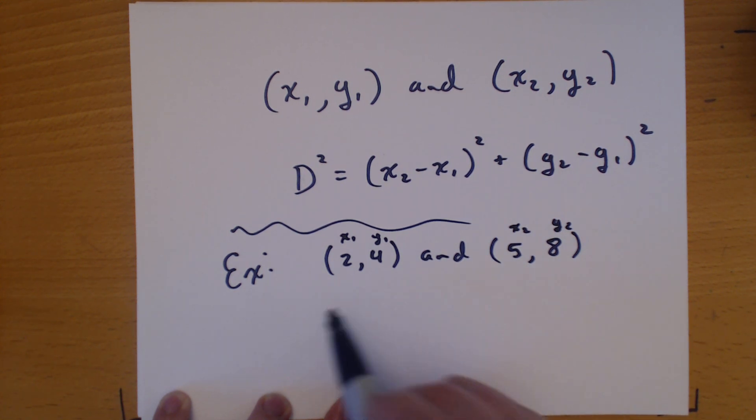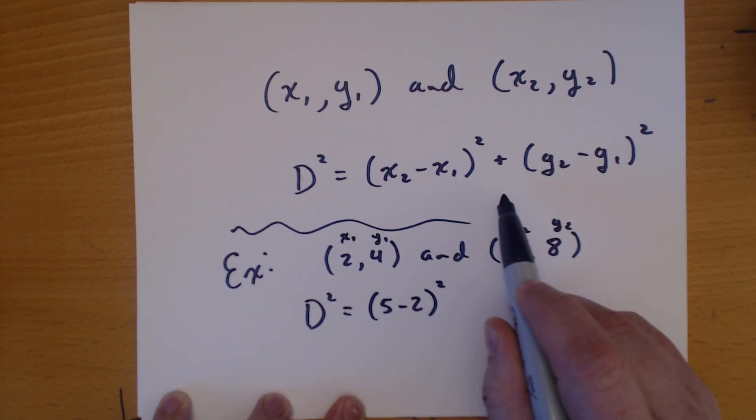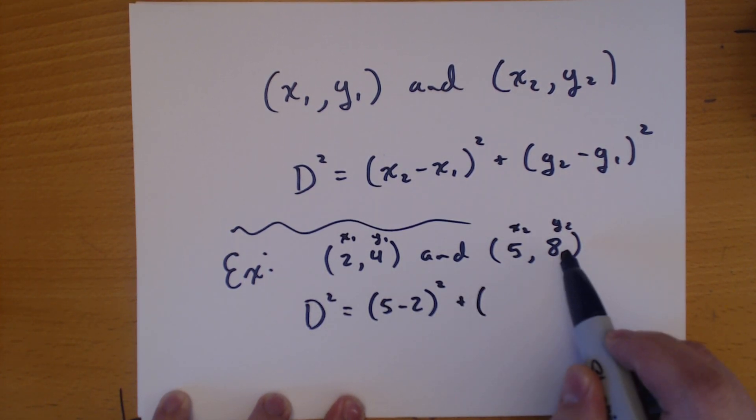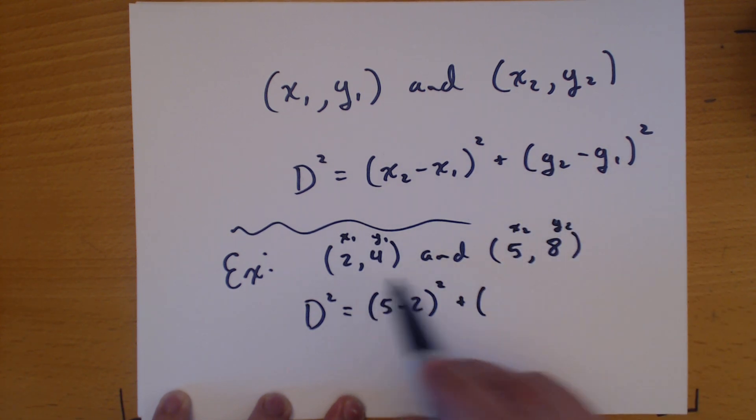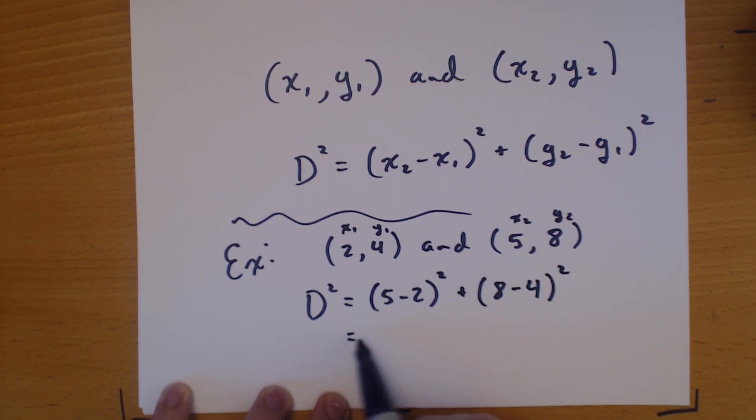So it'll be, well distance squared, don't forget that, 5 minus 2 squared. Put it in parentheses, square it, plus the second y minus the first y. So 5 minus 2 is 3 and 8 minus 4 is 4.